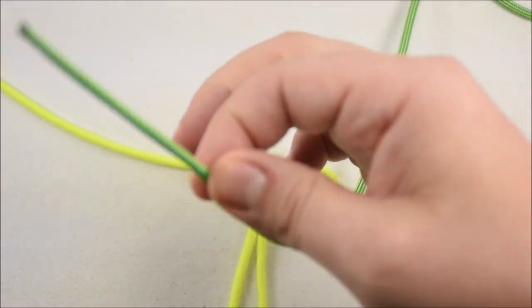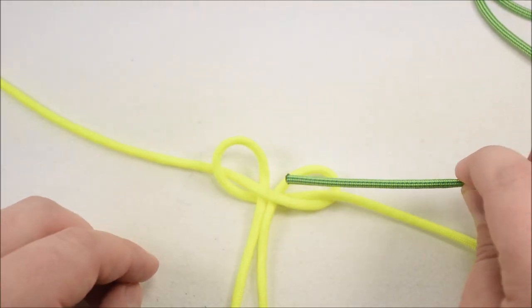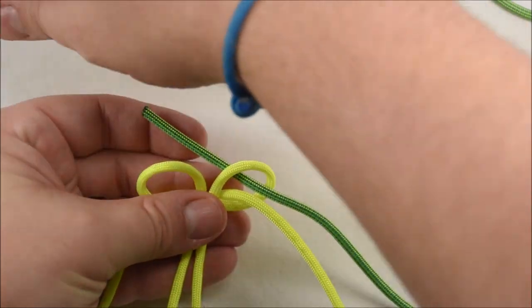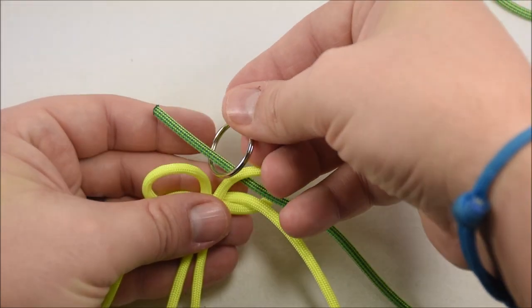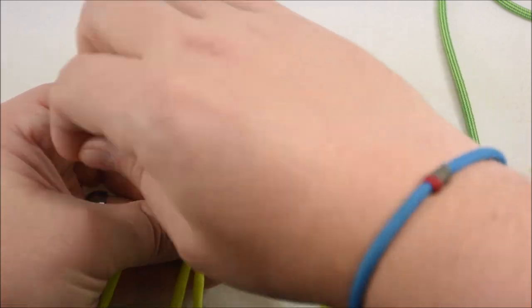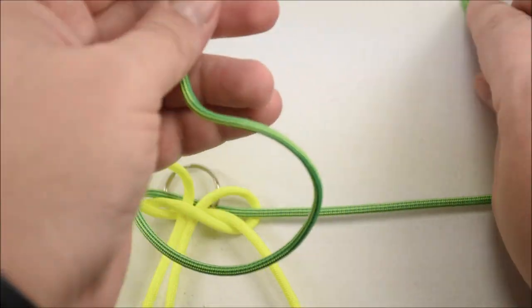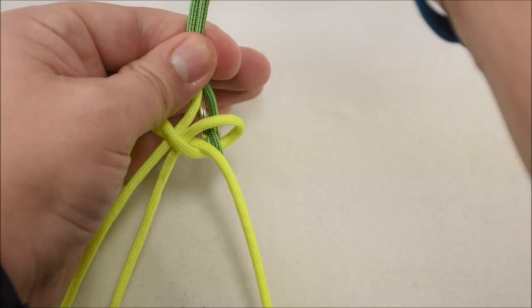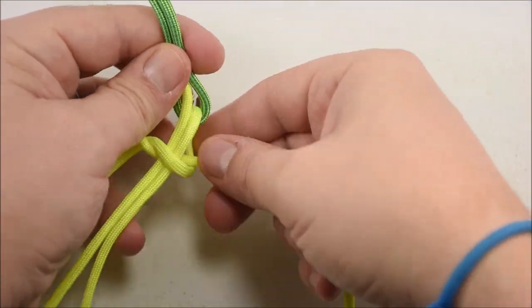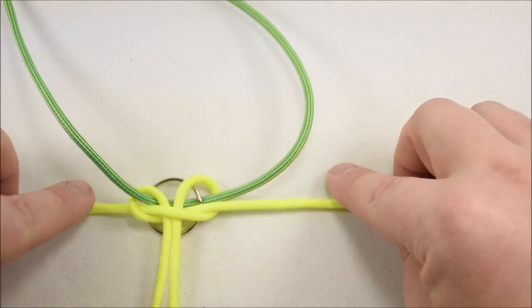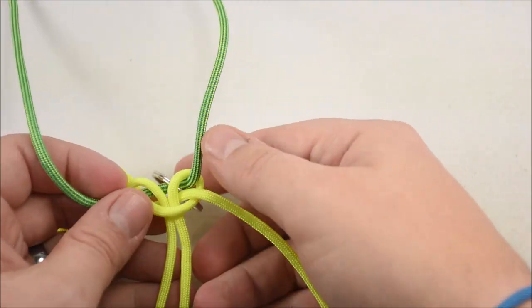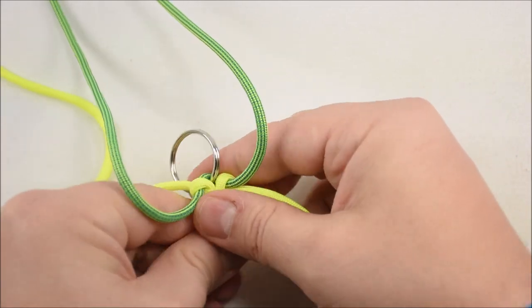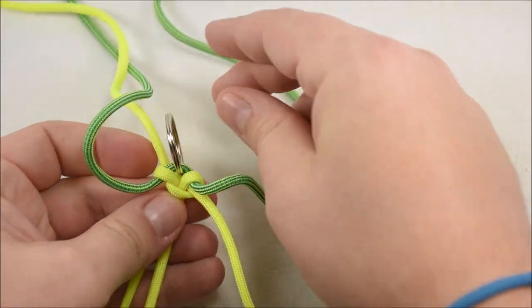And we're going to set that down. Now, what we want to do is grab your second color. You're going to feed this through these two loops. But when you do this, you're going to put your keychain on it after you go through the first, or your keyring on here, after you go through the first one. And then feed it through the second loop. And you want to put your two ends together after you do that, and pull this through so that the center is right there on the keyring.